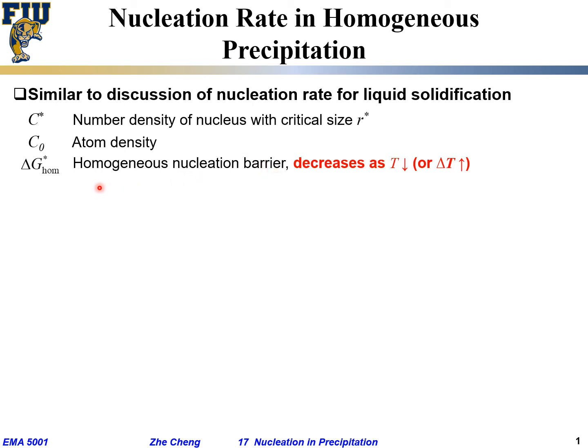And from what we learned before, this critical nucleation barrier or critical nucleation energy would decrease as temperature decreases or undercooling increases. As we are further below the equilibrium temperature, our temperature would be lower, our so-called undercooling would be larger, and the larger the undercooling, the smaller this barrier.